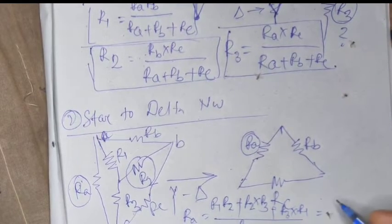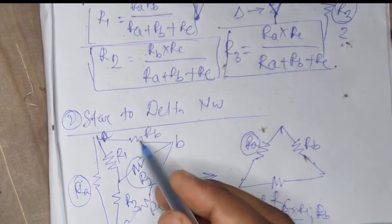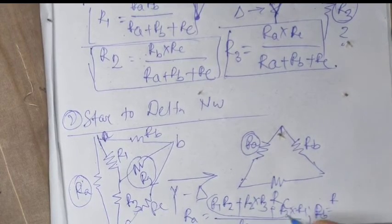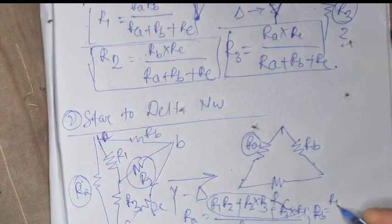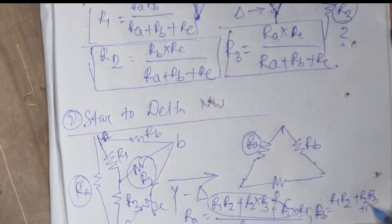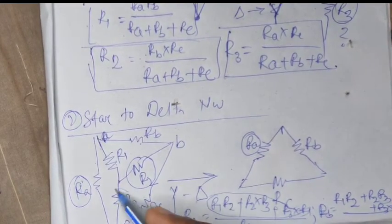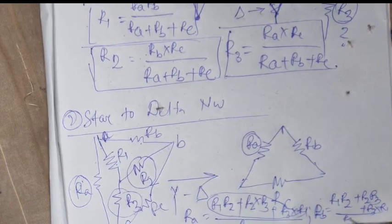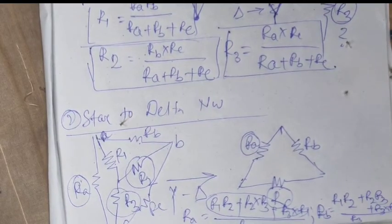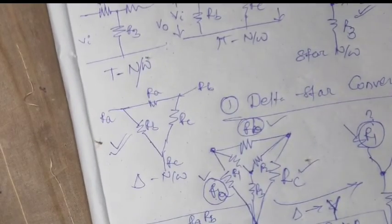Similarly, to find the resistance RB, the numerator is the same — R1 into R2 plus R2 into R3 plus R3 into R1 — divided by the opposite arm resistance, which is R3. In the same way, you can find the RC value. This completes the conversion of star to delta and delta to star networks. That's it for today, thank you for watching.